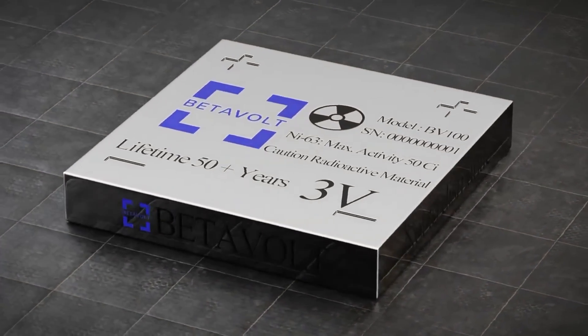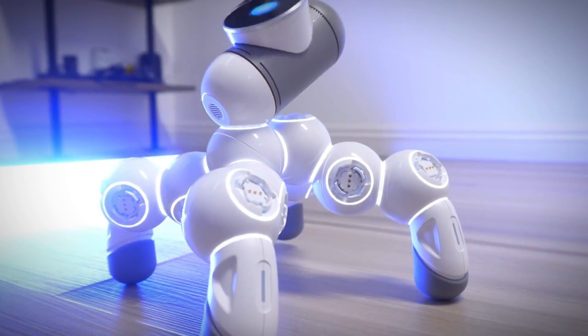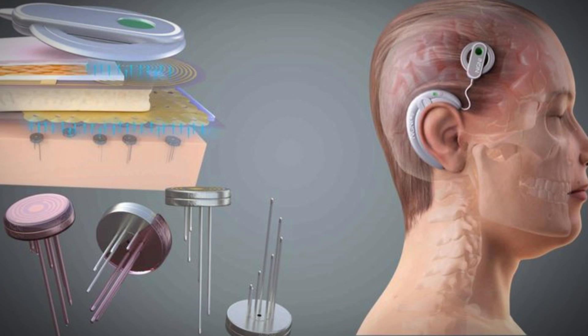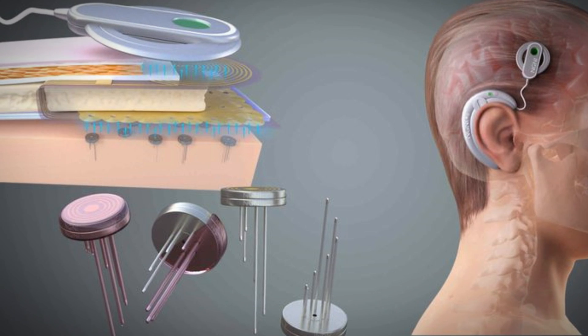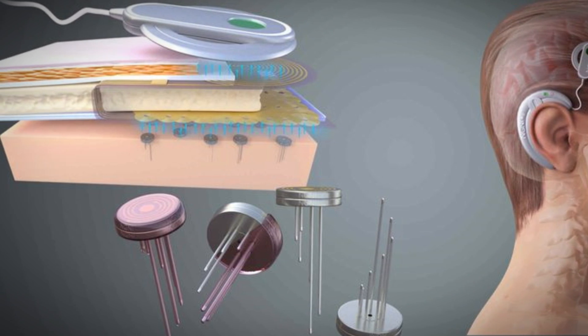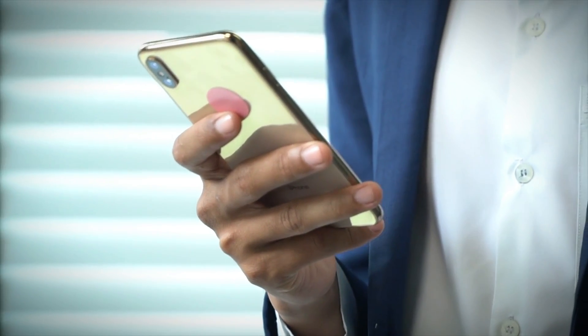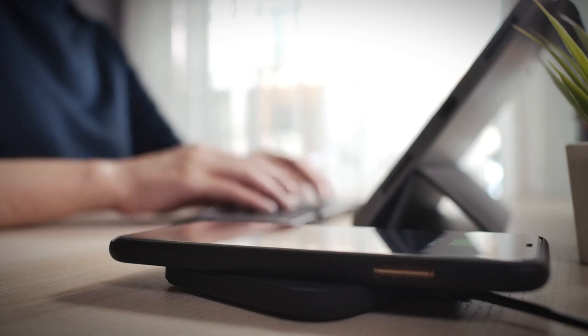Betavolt says that its battery can power AI equipment such as robots, smart glasses, or neural interfaces for 50 years without affecting their performance or functionality. The battery can also enable these devices to operate autonomously without depending on external power sources.